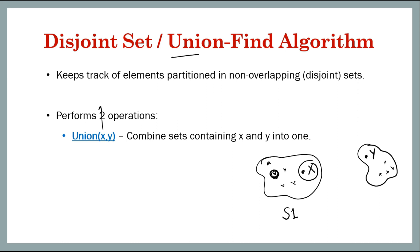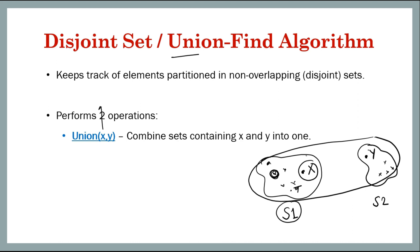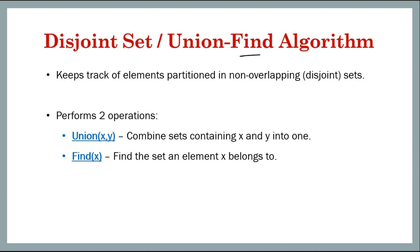We find the representative of the set x belongs to, and similarly the representative of the set y belongs to. If they are in the same set, there is nothing to do. If they are in different sets, we combine them into one set, with one of the leaders becoming the leader of the entire combined set. The second operation is find — find(x) simply returns the representative of the set that element x belongs to.